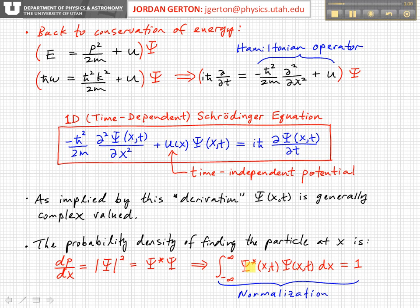If you integrate this probability density ψ*ψ over all space - in this case, it's just a one-dimensional wave function, so we integrate along the x direction from minus infinity to plus infinity - then we have to get a probability of one. This means that the particle has to be somewhere in space.